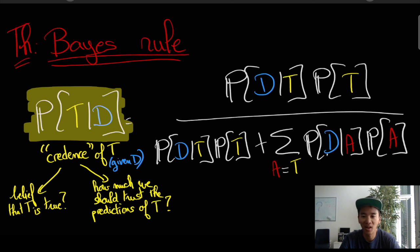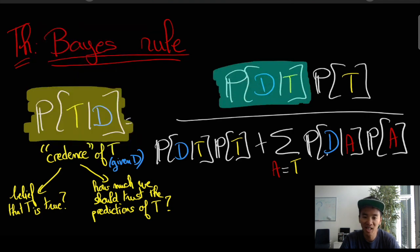That's what Bayes rule tells us to compute this posterior credence. And in order to do this, we're going to have to rely on the different terms on the right-hand side.